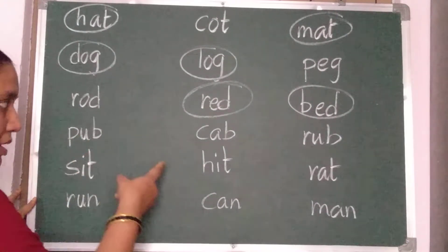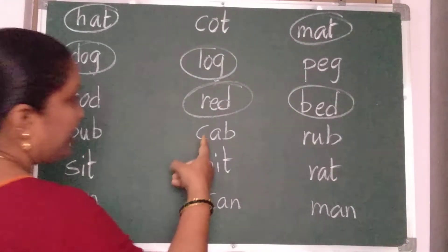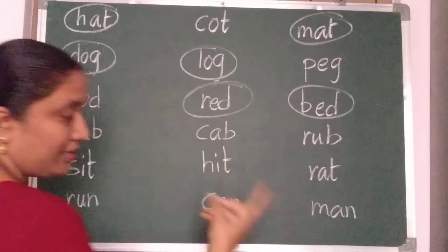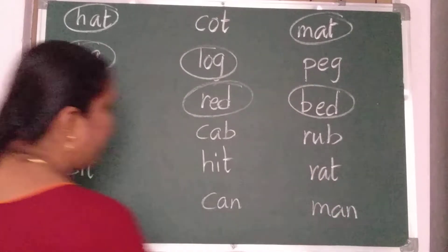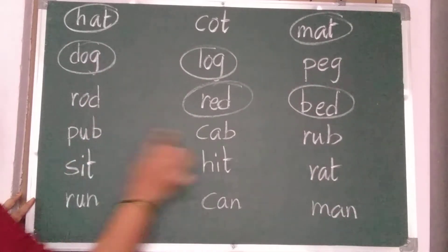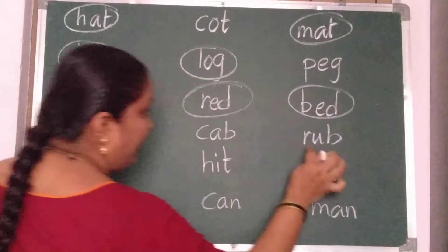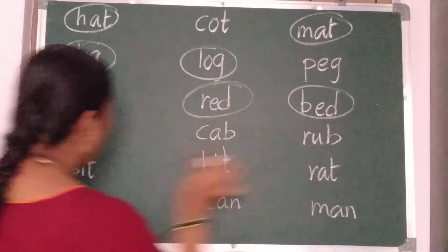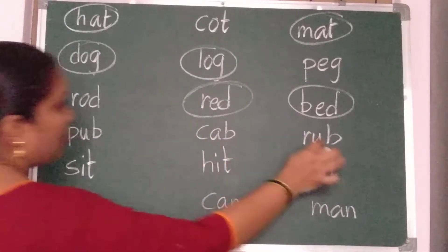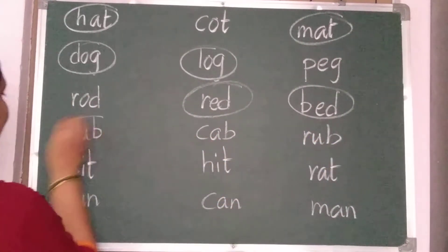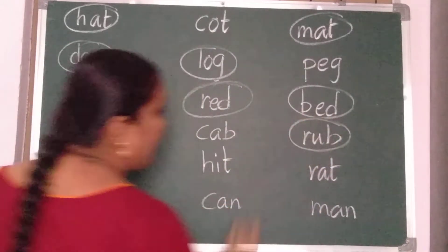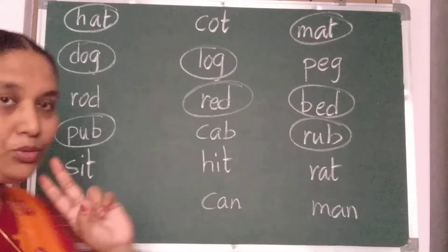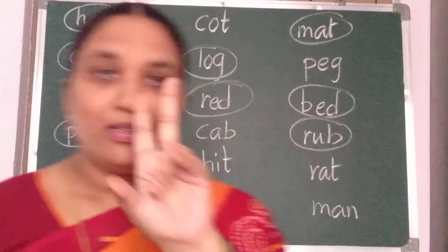P, U, B — pub. C, A, B — cab. R, U, B — rub. U, B and U, B — again U, B. So these two are the same rhyming words. Last two letters are same.